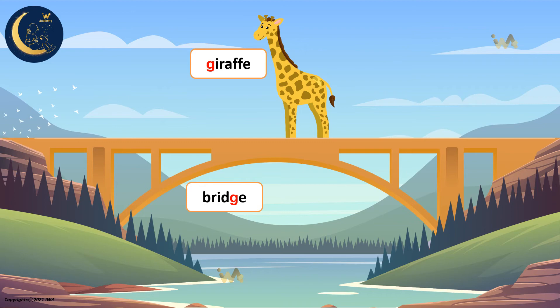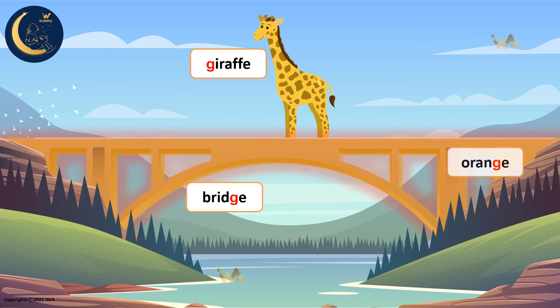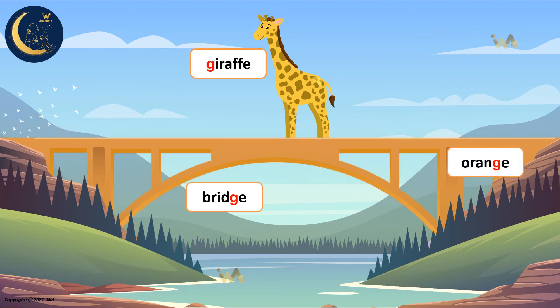The colour of the bridge is orange. Orange. What is the last sound in the word orange? Very good! It's the sound J. Let's say the words again: giraffe, bridge, orange. Very good!